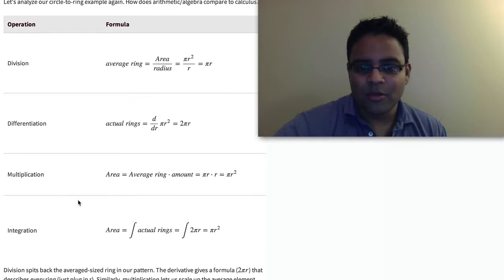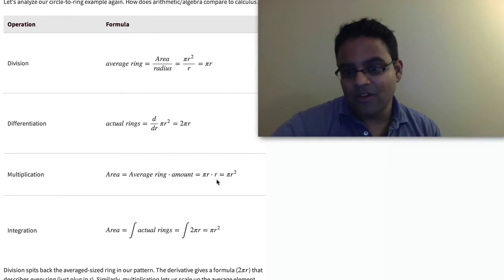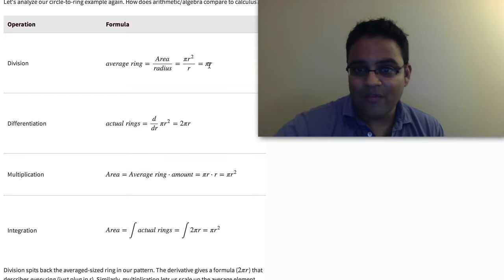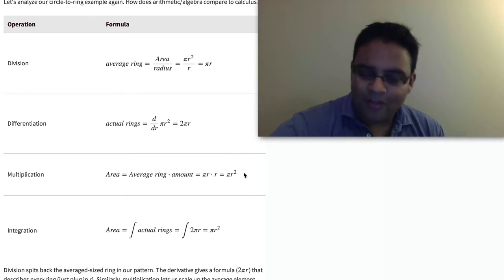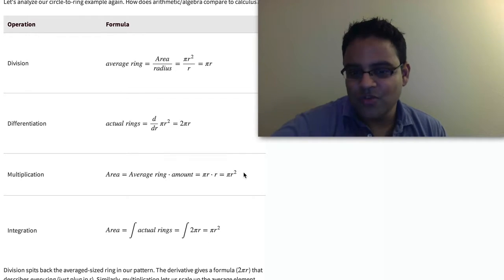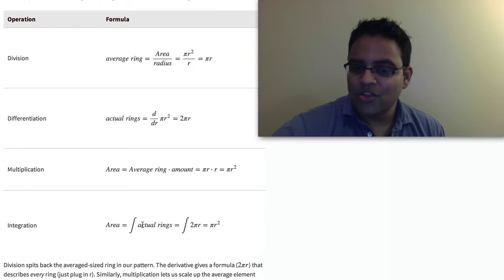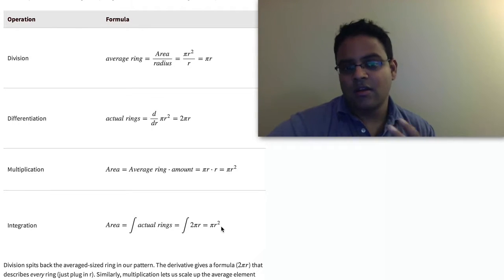For multiplication, it's similar. If we know the average ring size, we can scale it up by the right amount and get the formula back. We know the average ring is pi r, there's r rings, so we multiply it and we get pi r squared. With integrals, we can actually use the real actual rings, integrate that up, and get pi r squared. Division and multiplication work on averages. Differentiation and integration work on the specific details.